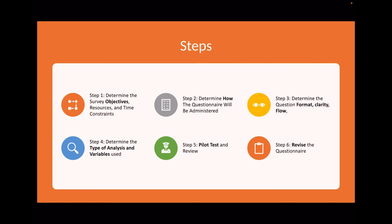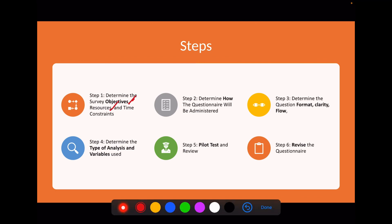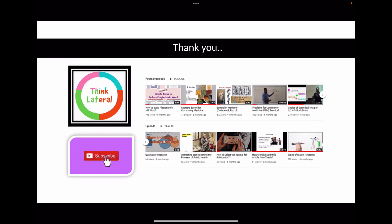To sum up, the steps in designing a questionnaire are: determine the objectives, resources, and time constraints; decide how the questionnaire will be administered; determine the format, clarity, and flow; determine the type of analysis and variables; conduct a pilot study and review it; then revise the questionnaire. All the best for your research and questionnaire development — if you like this video, please share it with your friends, and ask any doubts in the comment section.